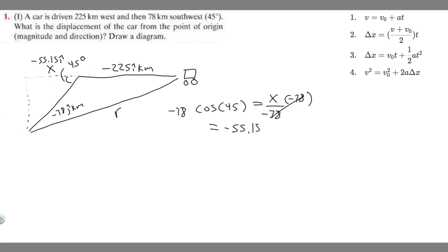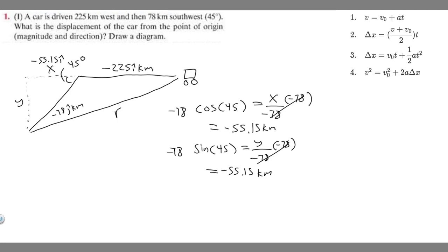Now we use sine to find the y-component. Sine of an angle equals opposite over hypotenuse, so sine of 45 degrees equals y over minus 78. Multiplying both sides by minus 78 gives y equals minus 78 times sine of 45, which also equals minus 55.15 kilometers. We label this with a j.